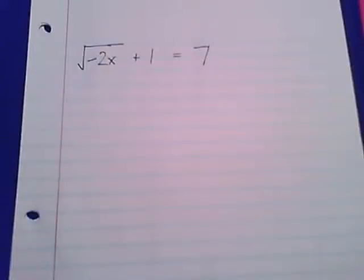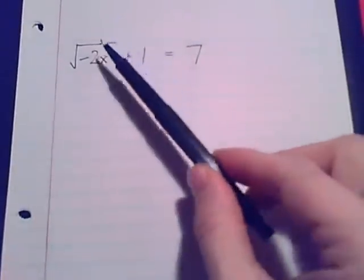Here's our next example to illustrate a very important idea about when we should or shouldn't square both sides to solve an equation. Here's an example where we don't want to square both sides just yet, and it's because our radical is not isolated.